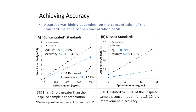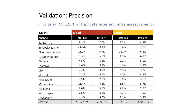Moving on to look at how the precision fared, our criteria was that the coefficient of variation between triplicate inter- and intra-measurements would be within 20%. This was true for both blood and serum. The inter-precision was 8% on average in blood and 5.4% on average in serum, whereas the intra-precision was 5.8% in blood and 4.8% in serum.